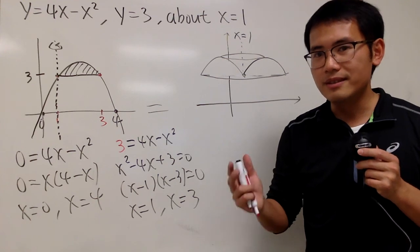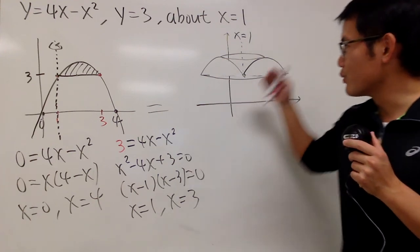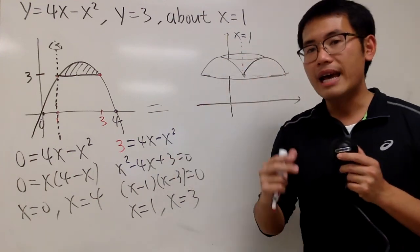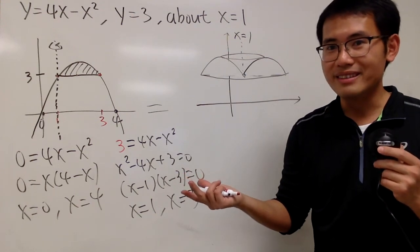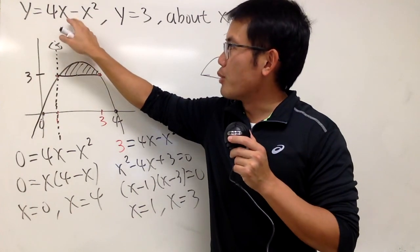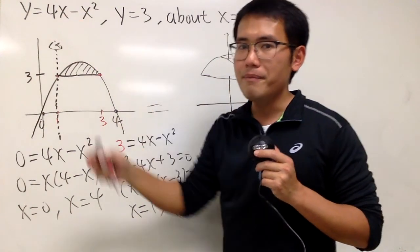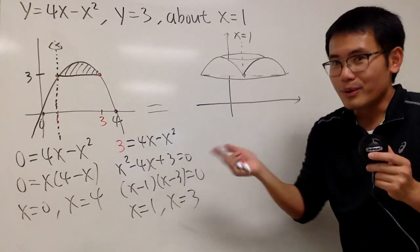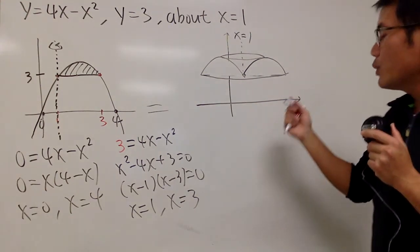Now, you can try to use the disk method, and of course, you have to do the big one minus the small one, and that's called the washer method. But don't do that, because in order to do so, you have to find out the expression x in terms of y. It will take some time. It's doable, though. You can try to do it. But here we'll do the shell method.